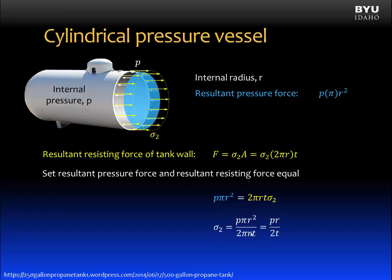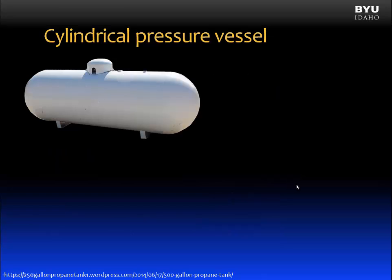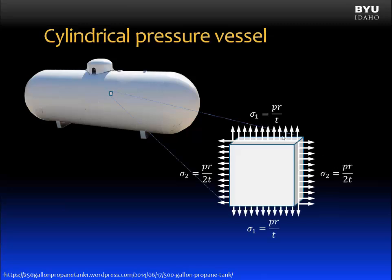Solving for σ₂ gives σ₂ = pr / 2t. This is called the axial stress, or the longitudinal stress, because it acts in the direction of the longitudinal axis. So a small element of the pressure vessel wall has a hoop stress σ₁ = pr/t acting in the circumferential direction and a longitudinal stress σ₂ = pr/2t acting along the axis. The hoop stress is twice as large as the longitudinal stress.